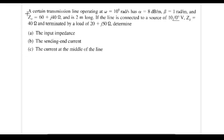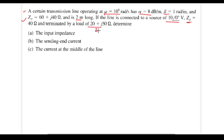This is the first problem I'm going to solve. The problem gives a transmission line with frequency omega equals 10^6 radians per second, an alpha value, a beta value, a characteristic impedance Z0, and the length. The line is connected to a voltage source with source impedance ZG equal to 40 ohms, and terminated by a load ZL of 20 plus j50 ohms.